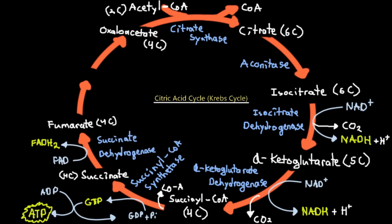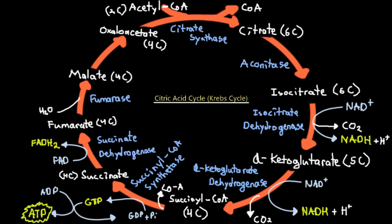Step six involves another oxidation via succinate dehydrogenase. Succinate loses two protons and two electrons; these are accepted by FAD, reducing it to FADH₂ — another electron carrier molecule. No carbon is lost in this step. The succinate, having lost electrons, becomes fumarate, still with four carbons but now oxidized.